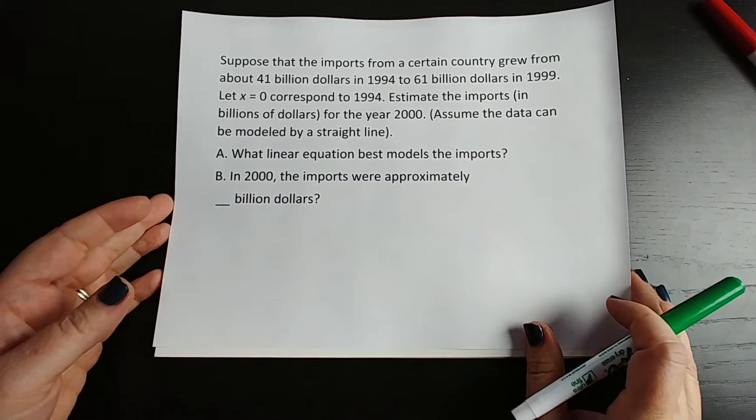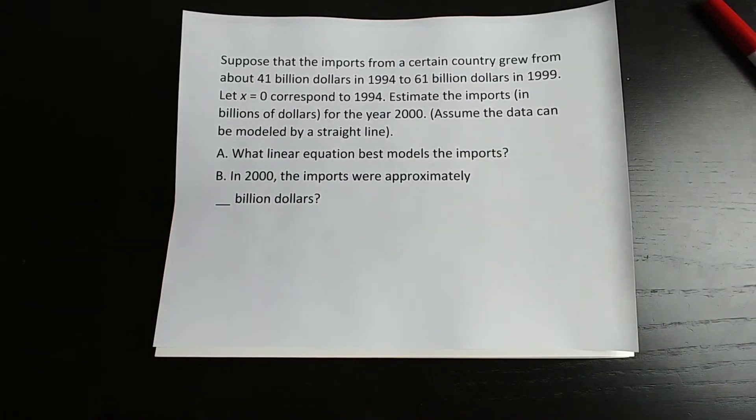It says that suppose the imports from a certain country grew from about $41 billion in 1994 to $61 billion in 1999. Let x equals 0 correspond to 1994. It wants us to estimate the imports in billions of dollars for the year 2000. Assume the data can be modeled with a straight line.